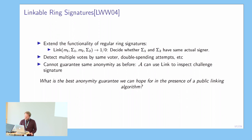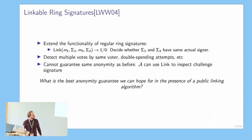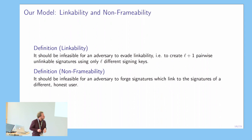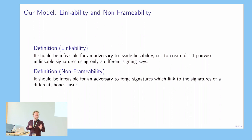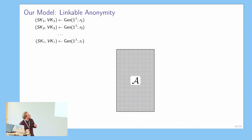In previous models this was usually solved by not giving the adversary access to any signing oracle, so if there's nothing to link against with the challenge signature you obviously can't use linking to check what user created it. We think we have a slightly stronger notion. The other two notions we need are linkability — if you have L signing keys you shouldn't be able to create L+1 pairwise unlinkable signatures — and non-frameability, which says the adversary can't maliciously create a signature that links to an honest user's signature. The main part of our new model is the linkable anonymity property.